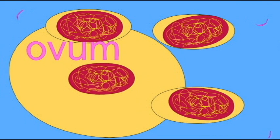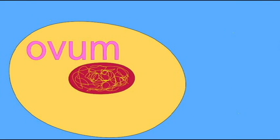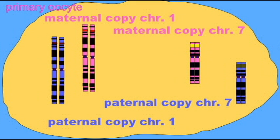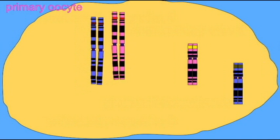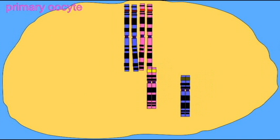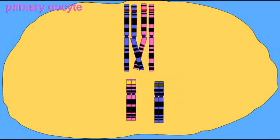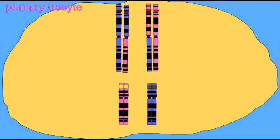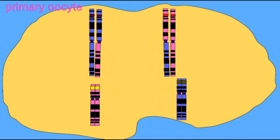Female gametogenesis is different from male gametogenesis in that in male gametogenesis four functional gametes are produced during meiosis, while in females one functional gamete is produced along with two or three non-functional cells which will later degenerate.